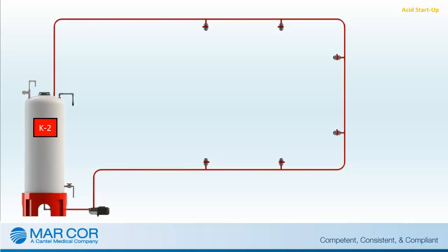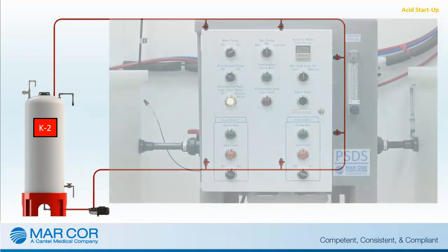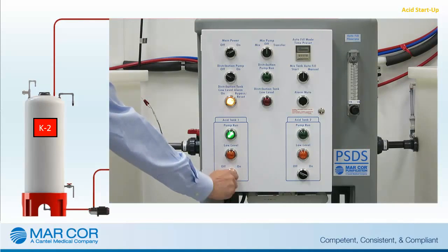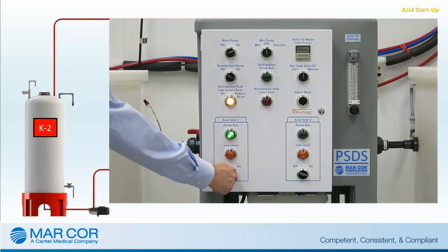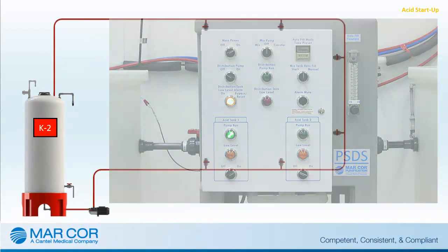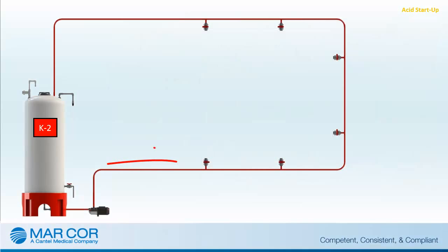Acid Distribution Startup verifies sufficient acid supply for the entire treatment day. Turn the appropriate acid tank hand switch to the ON position to start the associated acid pump, and then verify the respective acid tank pump run light illuminates. This will start the distribution of acidified concentrate to the hemodialysis delivery systems.